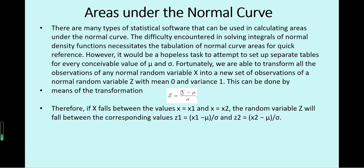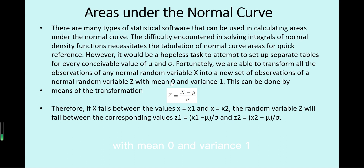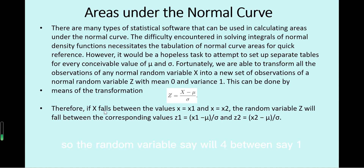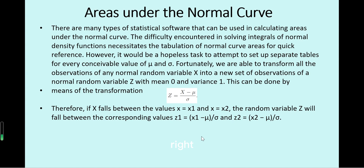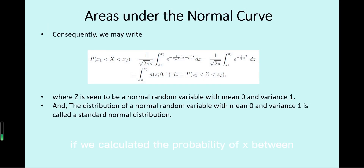If we subtract mu from random variable x and divide by sigma, we get the variable z. This is the standard normal distribution variable with mean 0 and variance 1. If x falls between x1 and x2, then z falls between z1 and z2, where z1 = (x1 - mu)/sigma and z2 = (x2 - mu)/sigma. Consequently, the probability of x between x1 and x2 equals the probability of z between z1 and z2.